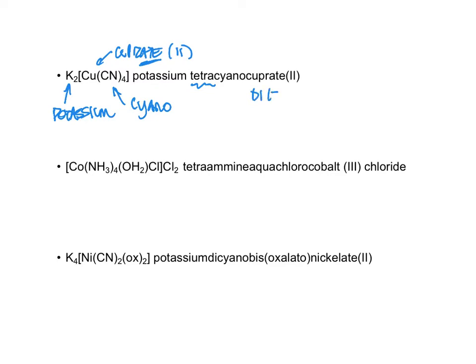If you see the word tetra here, we have some rules. If there are two, it is called di. If there are three, it is called tri. If there are four, it is called tetra. If there are five, it is called penta. If there are six ligands, it is called hexa. In this example, we have four, hence tetracyano.